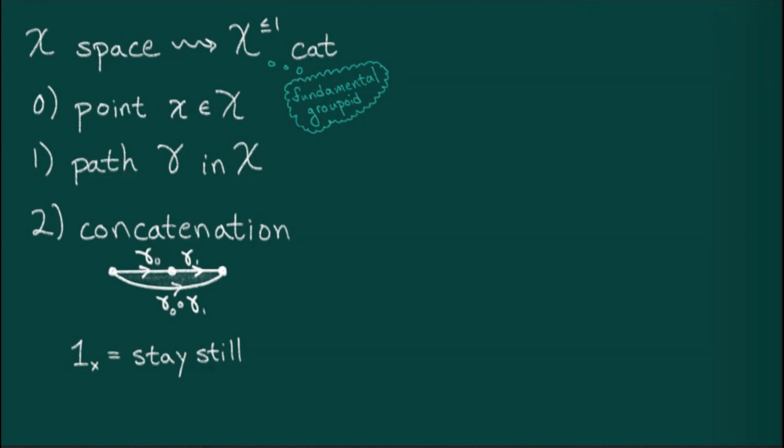If I had given a precise formulation of this category, which I haven't, I would be able to prove that every map, i.e. a path, is an equivalence. Its inverse is given by retracing your steps, i.e. going along the path in the opposite direction.